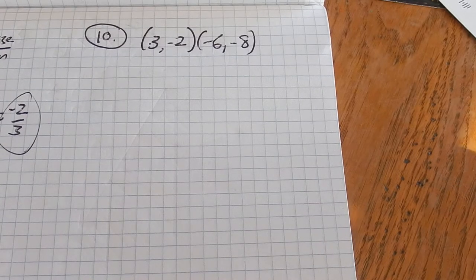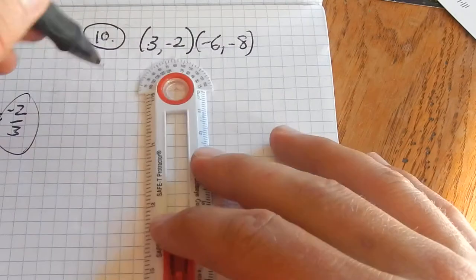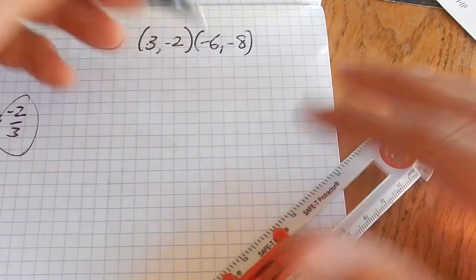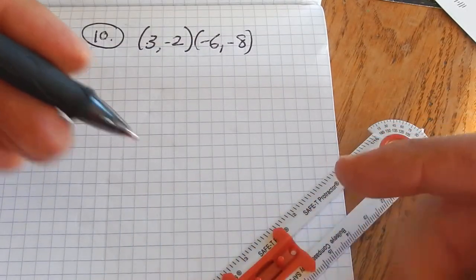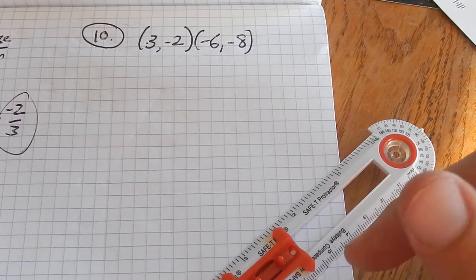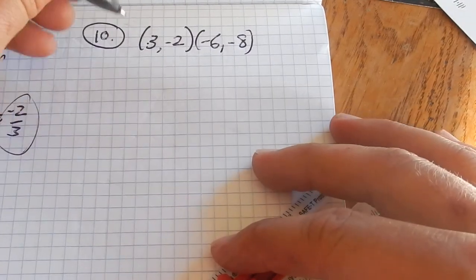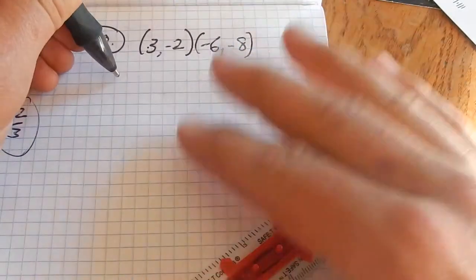I could graph them out, figure out the slope, plug it into point-slope form. I'm going to be a little lazy. I'm not going to graph it. I'm going to use what I know about slope.